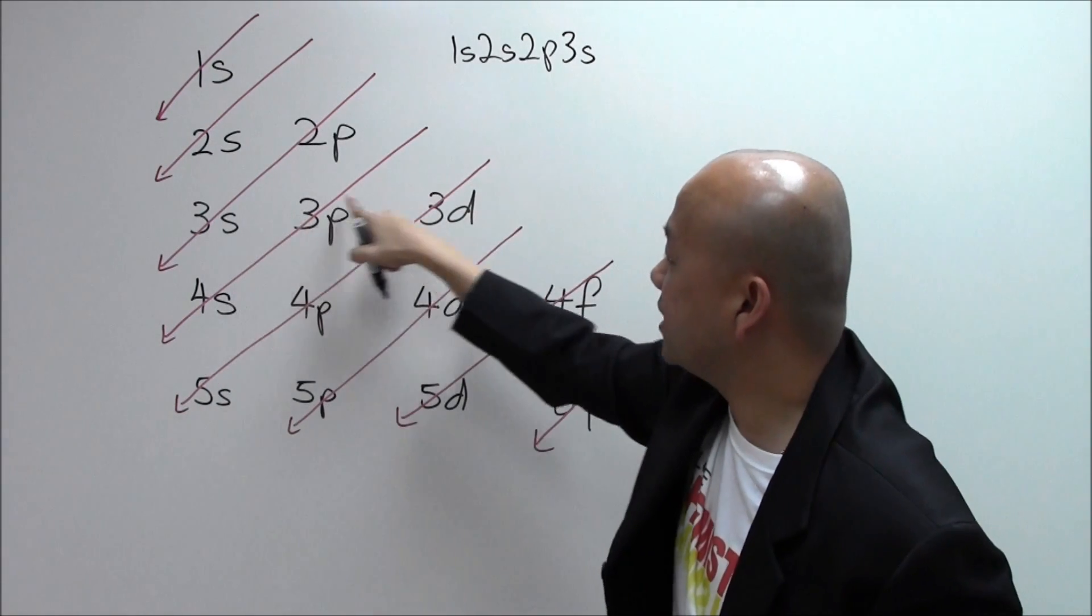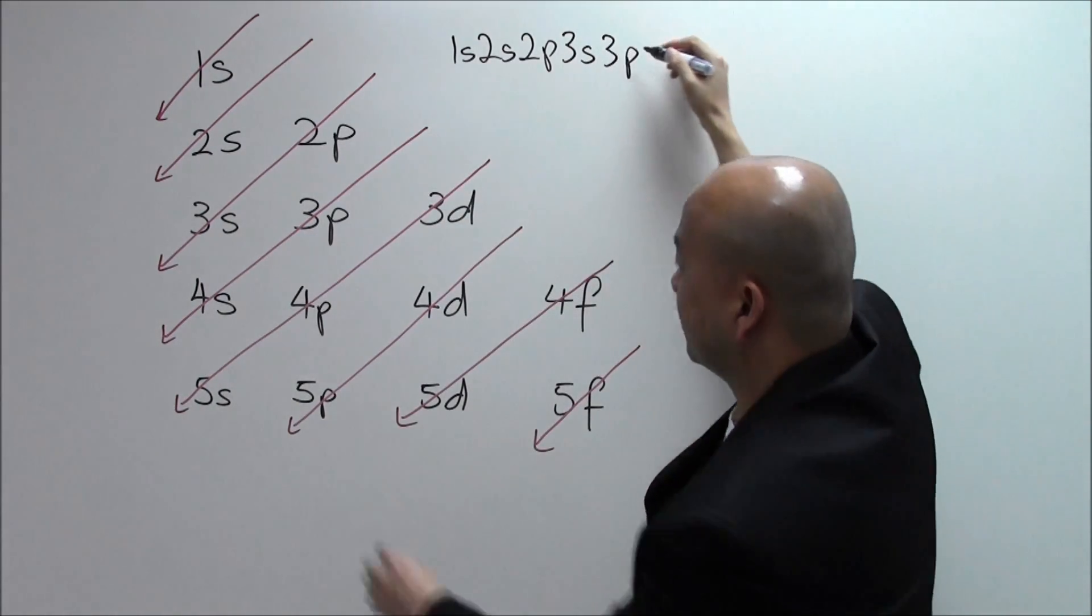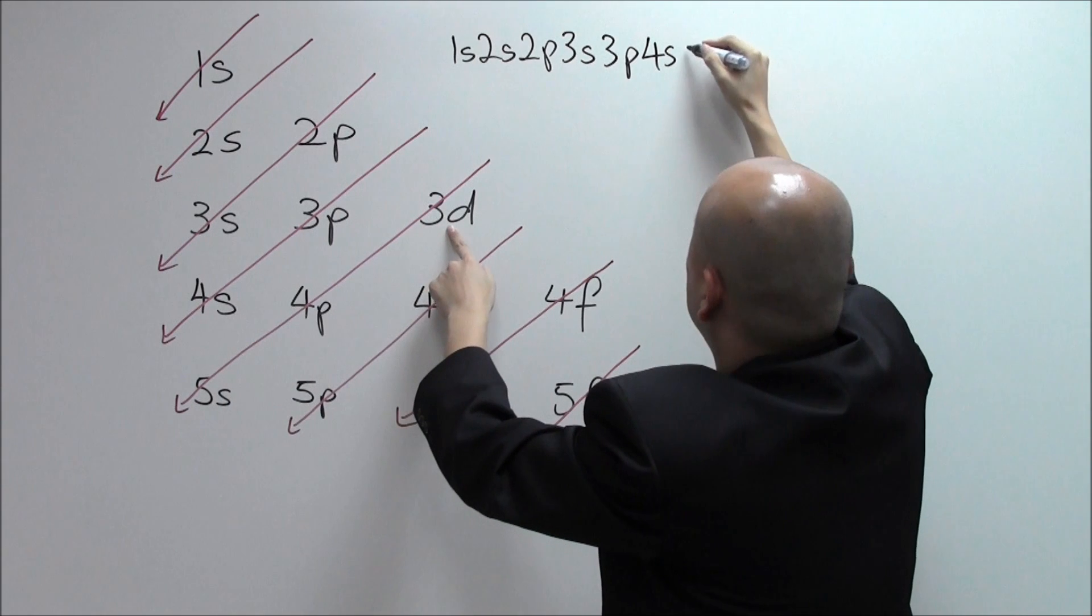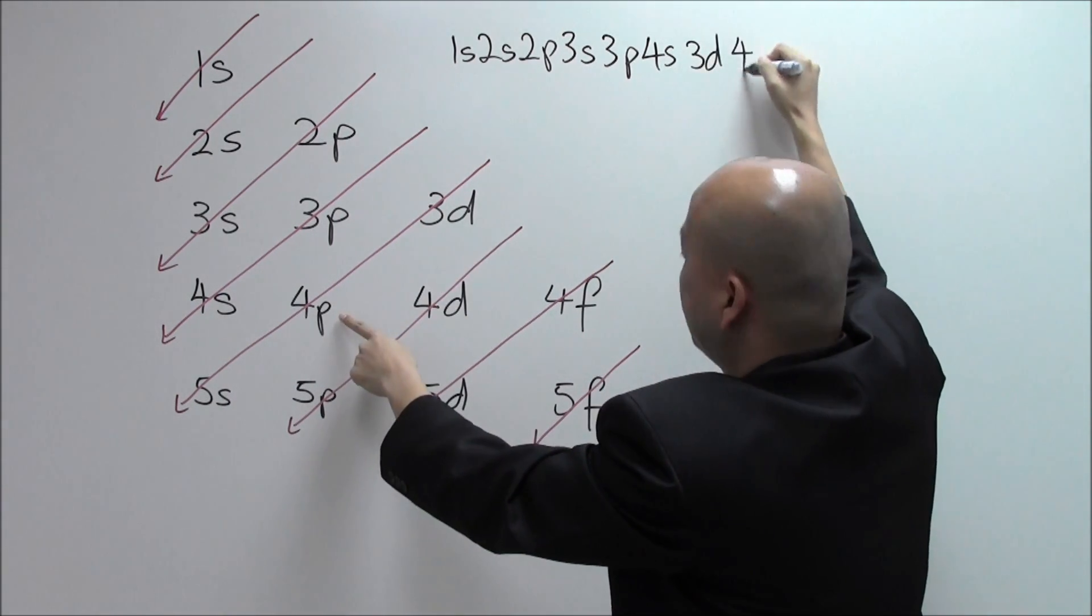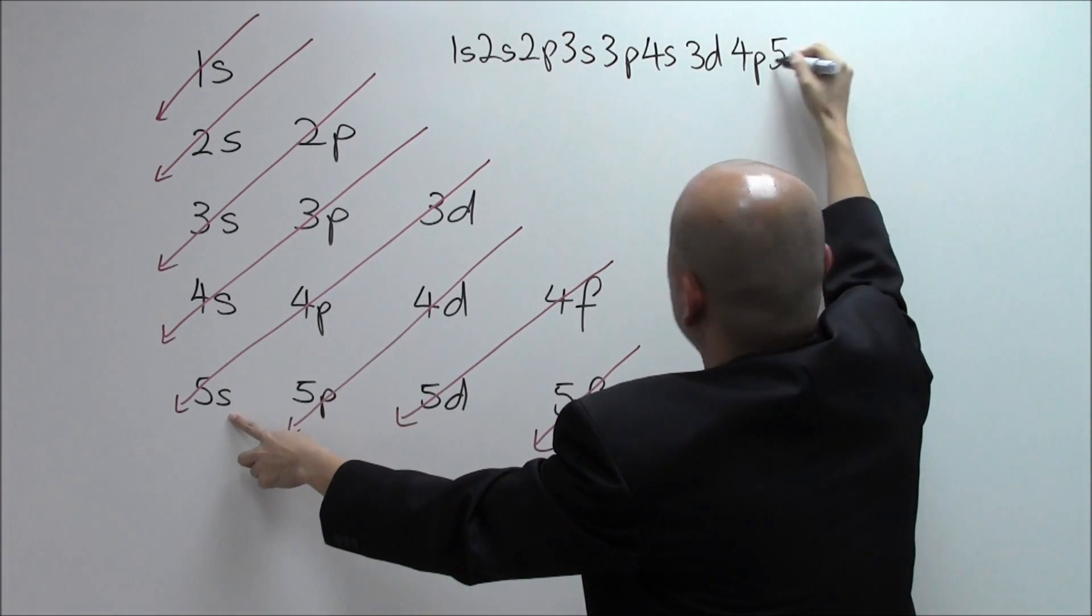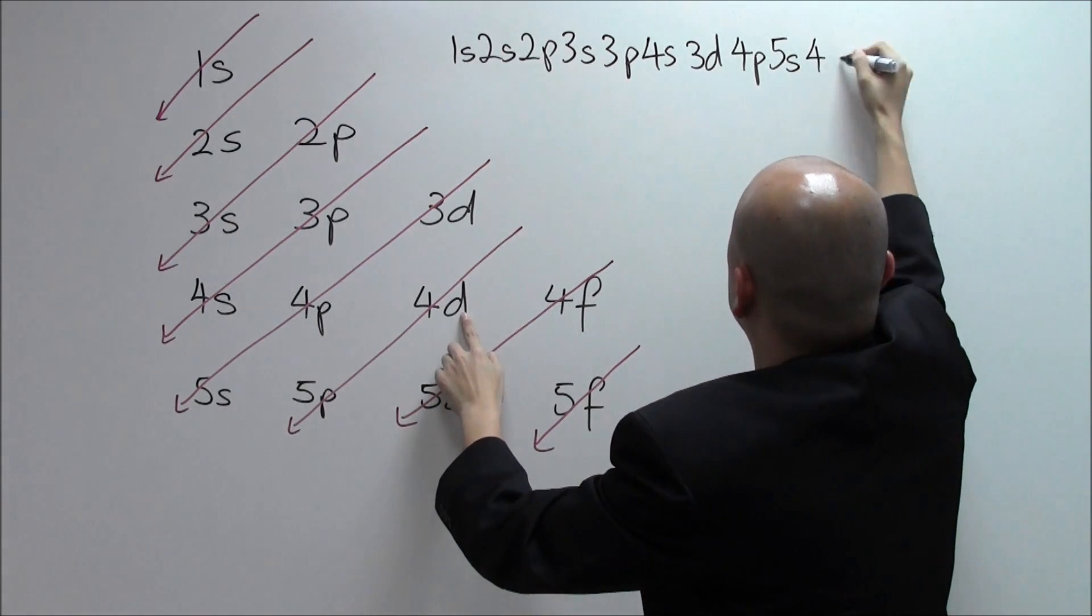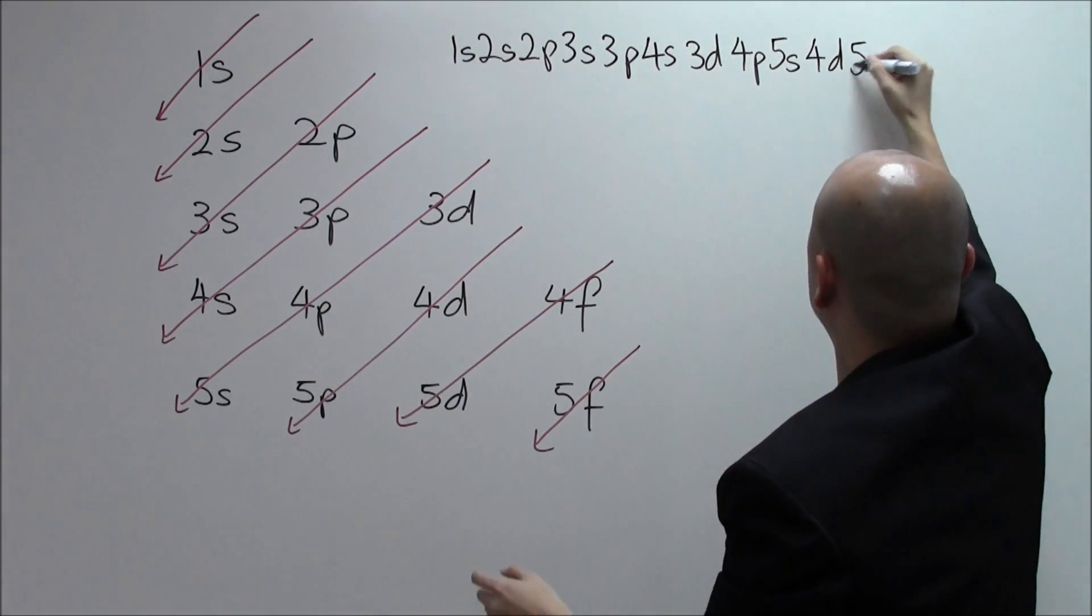And next we have 3s, and after 3s we have 3p, 4s, 3d, 4p, 5s, 4d,